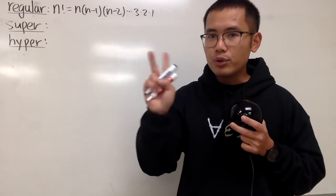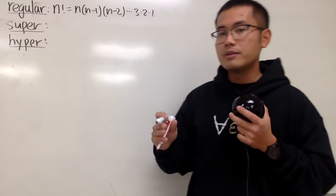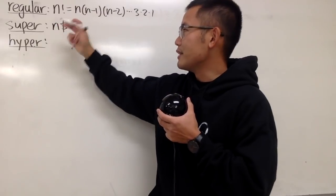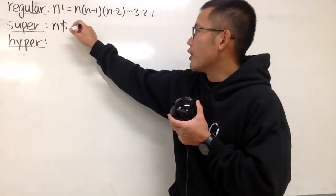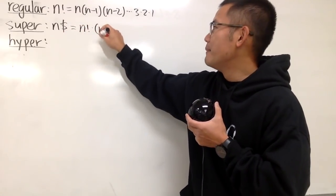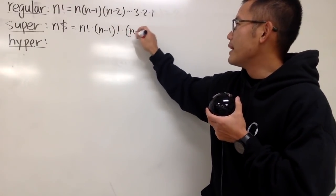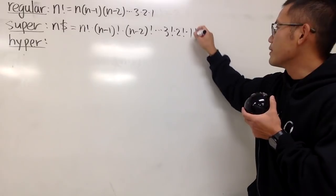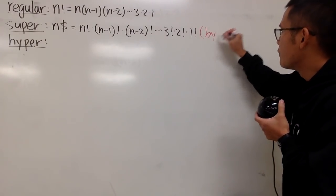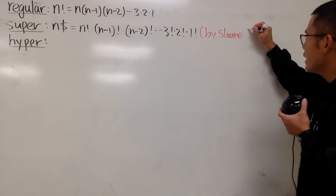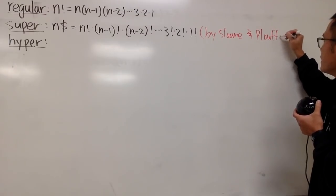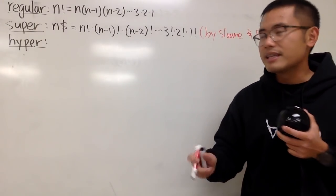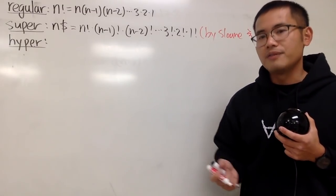For the super factorial, we actually have two definitions. Let me demonstrate the first definition right here, and at the end of the video I'll show you guys another one. The notation is that we put n with a dollar sign next to it. What we do is we start with n factorial, and then we multiply by n minus 1 factorial, then n minus 2 factorial, and so on, until we have 3 factorial times 2 factorial times 1 factorial. This definition is by Sloane and Plouffe, and the other definition is by Pickover — both published in 1995.